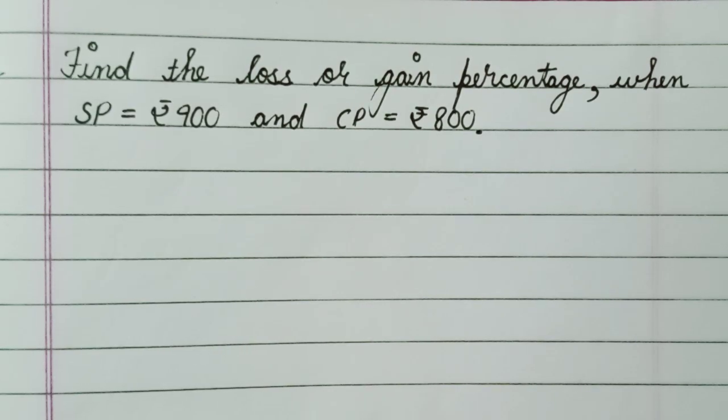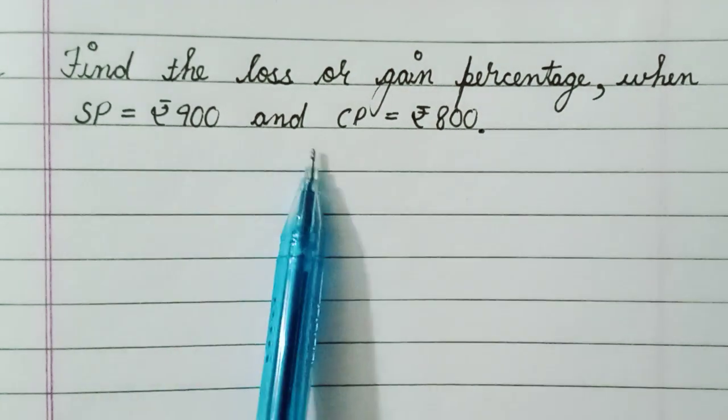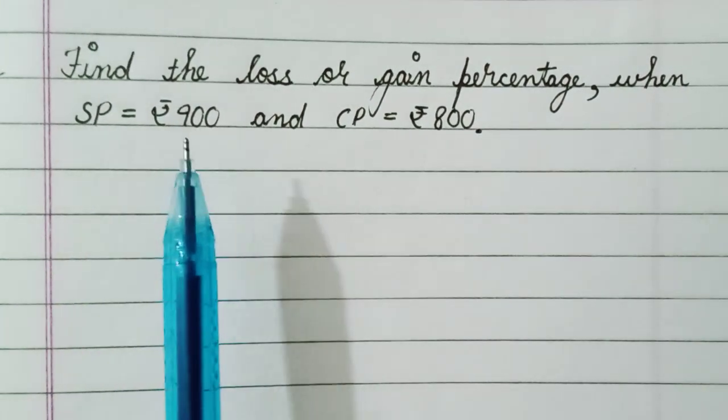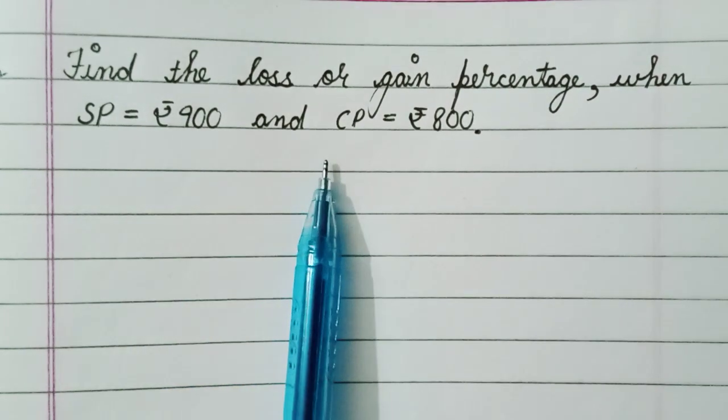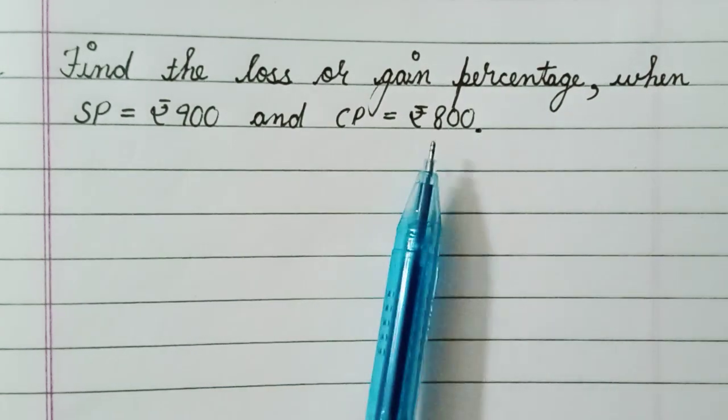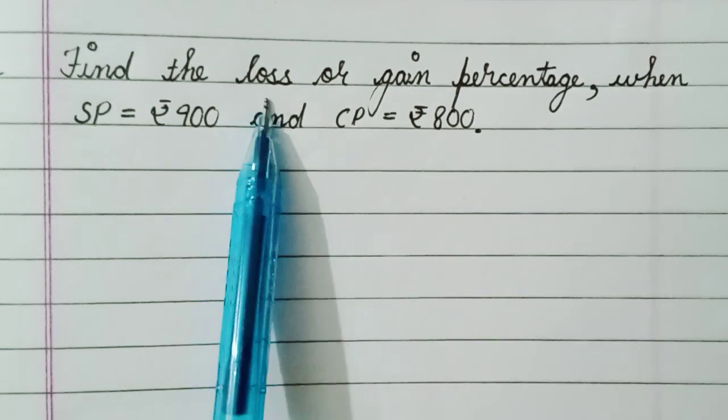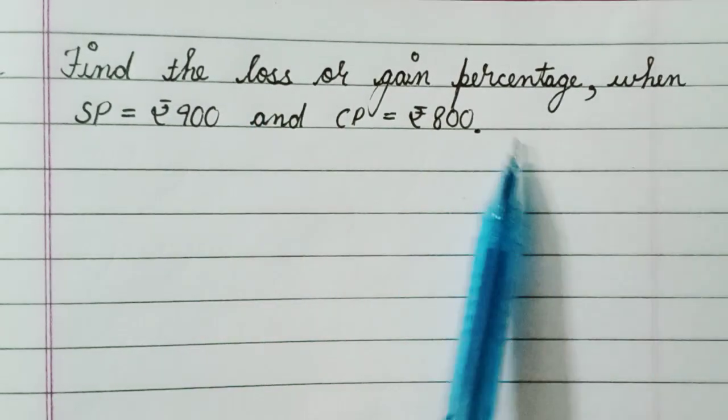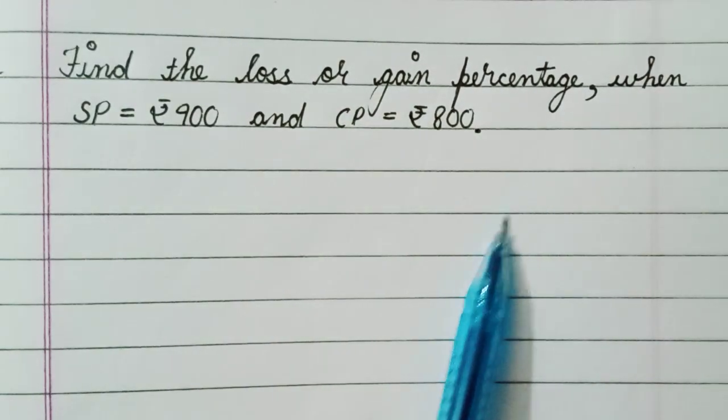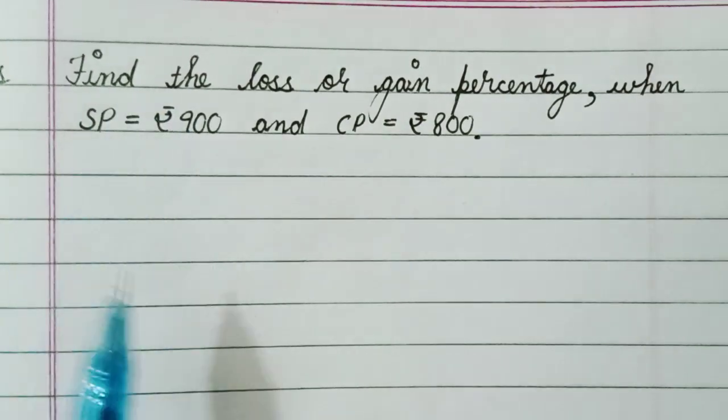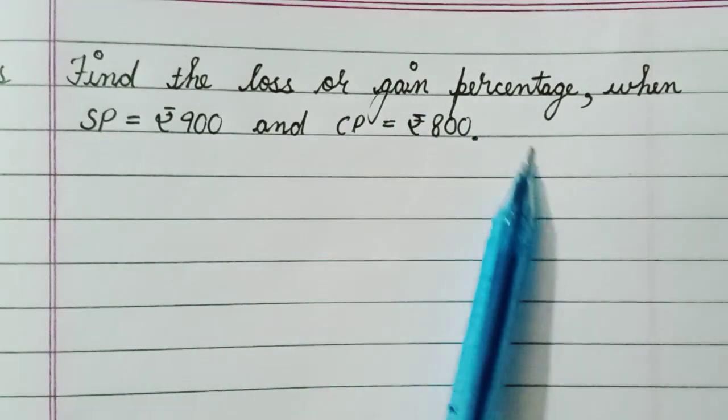Hi friends, welcome back to my channel. Today we are going to find the loss or gain percent when SP equals rupee 900 and CP equals rupee 800. As we can see, SP is 900 and CP is rupee 800.